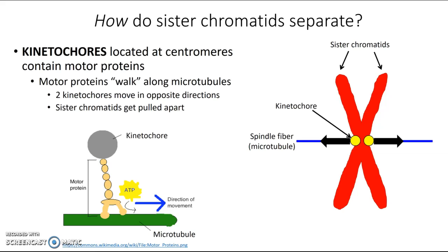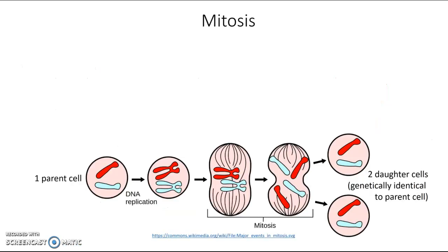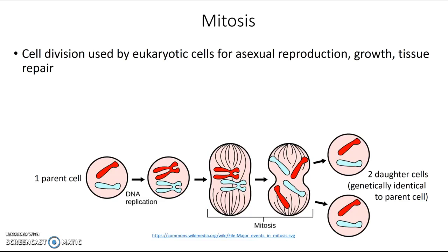Now that you have all the background information about cell division in eukaryotes, we're ready to take a closer look at mitosis. This is the cell division process used by eukaryotic cells for asexual reproduction, growth, and tissue repair. For example, if you scrape your finger, the skin does eventually grow back by replacing cells using this mitosis process. In mitosis, one cell divides to produce two genetically identical cells, identical to each other and to the original cell.